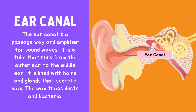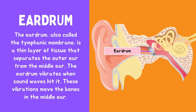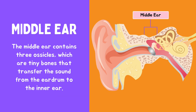The wax traps dust and bacteria. The eardrum, also called the tympanic membrane, is a thin layer of tissue that separates the outer ear from the middle ear. The eardrum vibrates when sound waves hit it, and these vibrations move the bones in the ear.